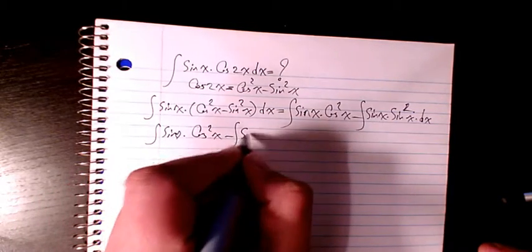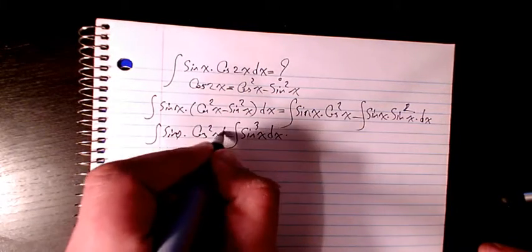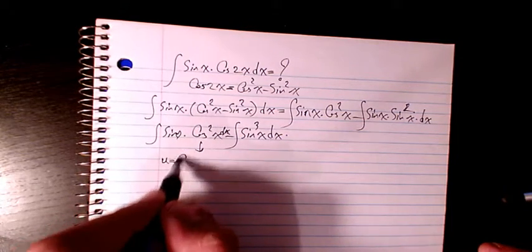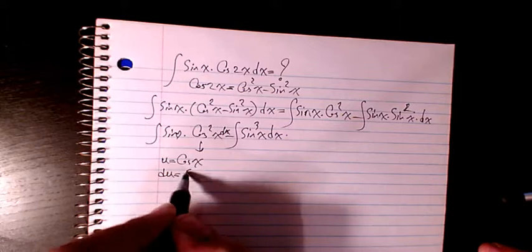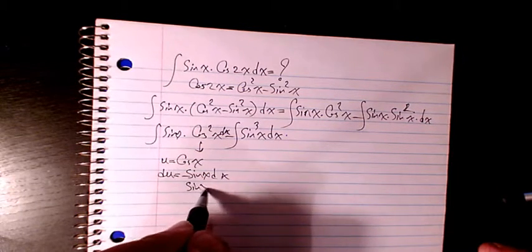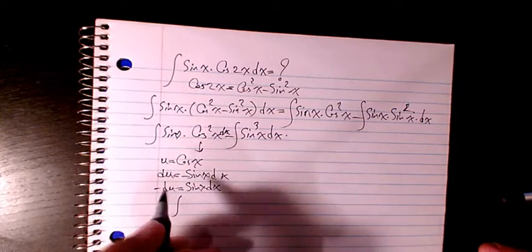Here we have dx. For the first one we can consider u as cosine x, so du will be negative sine x dx. So sine x dx will be negative du, so I can change it to...